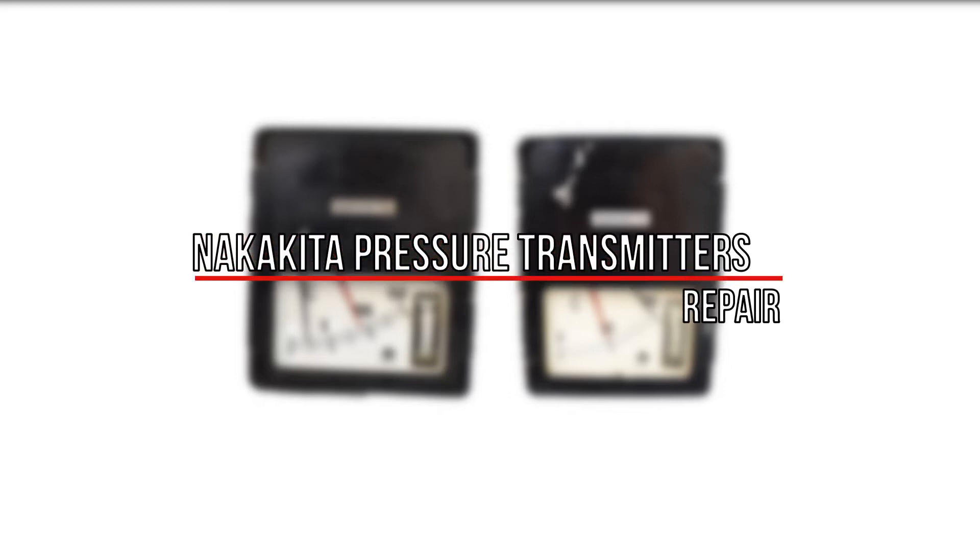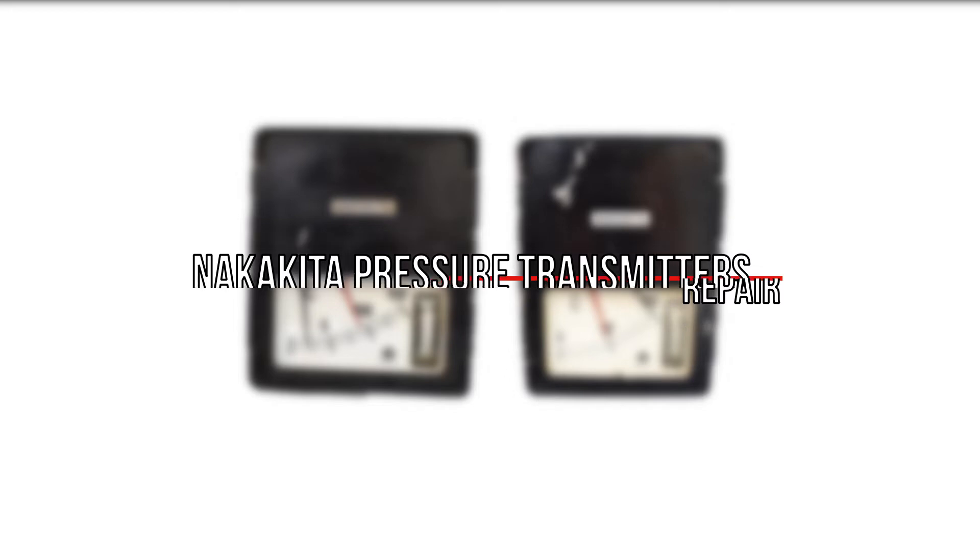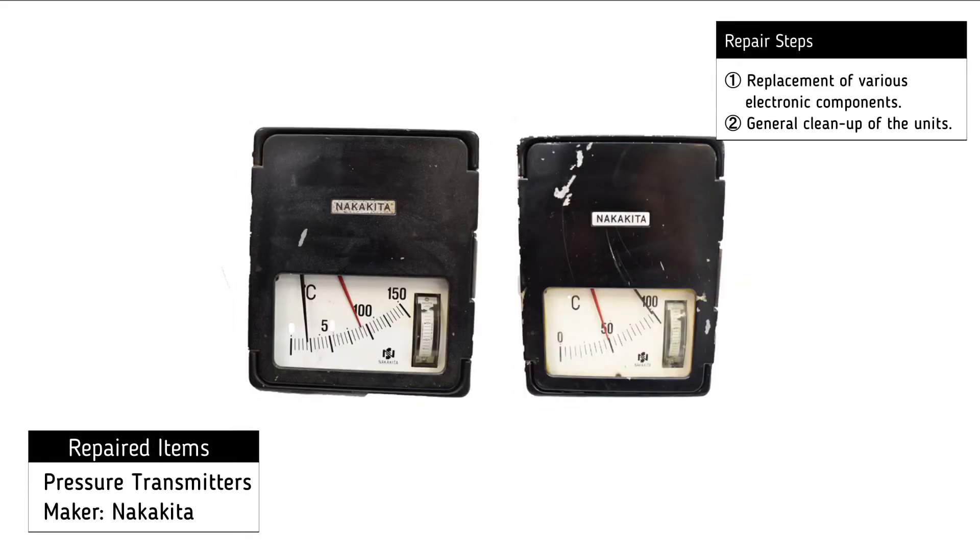For the repair of the Nakakita pressure transmitters, the following procedures were necessary: replacement of various electronic components and general cleanup of the units.